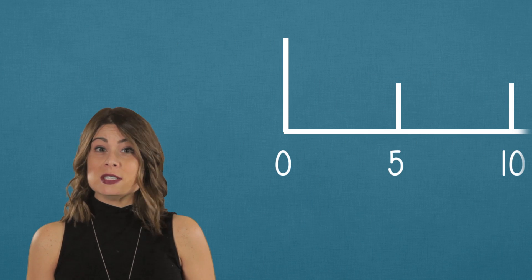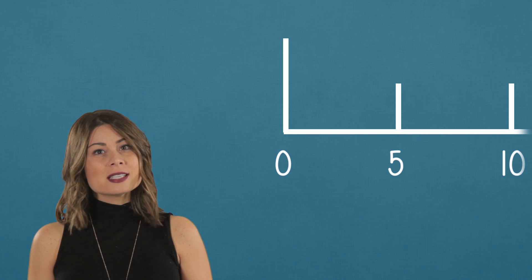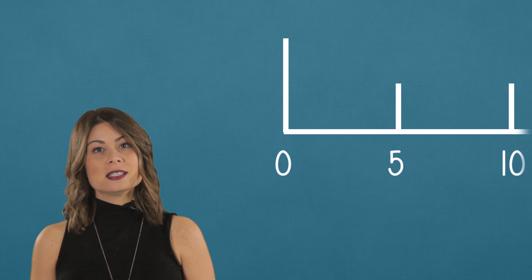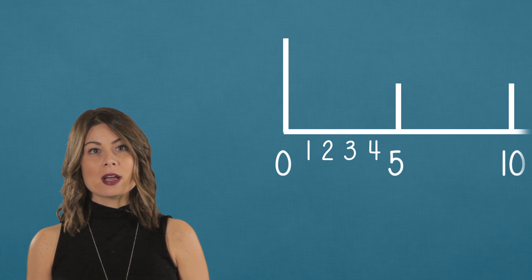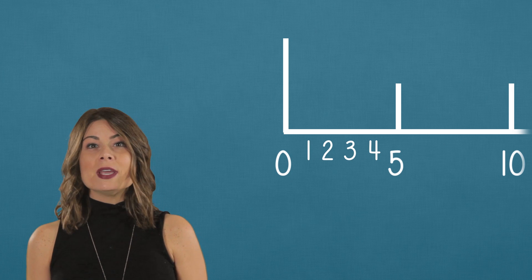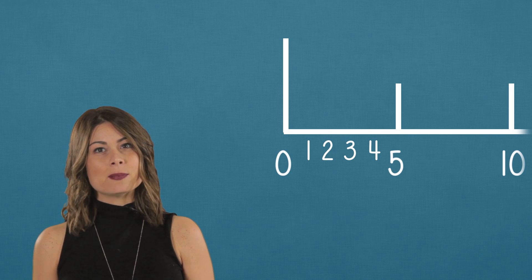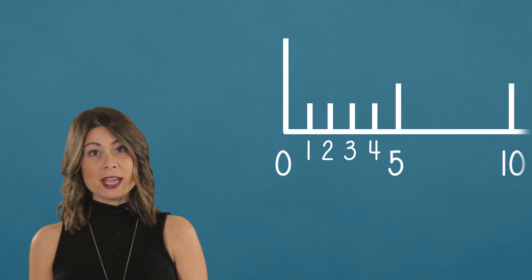But look here, between 0 and 5, we know there's numbers between 0 and 5, right? Well let's count them. We start at 0, then 1, 2, 3, 4, and we're back at 5. We can almost imagine smaller tick marks in between 0 and 5, right?